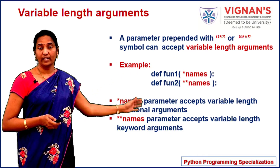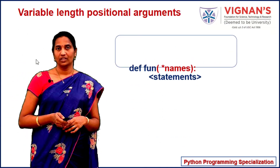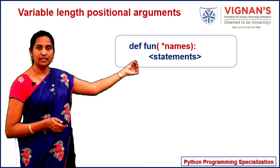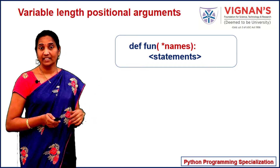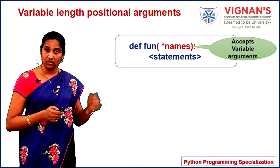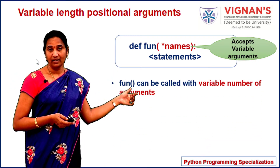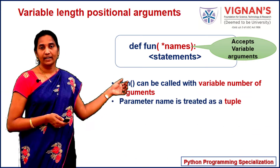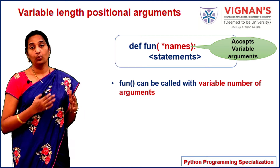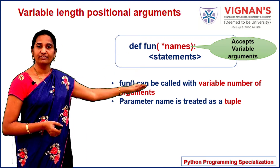Now let's understand these two types of variable length arguments in detail. First, let's check how we can use variable length positional arguments in Python. Consider this function definition — fun is the function name with a single parameter names. There is a single asterisk symbol prepended to names, which indicates it accepts variable length positional arguments. The parameter names is treated as a tuple inside the function body.